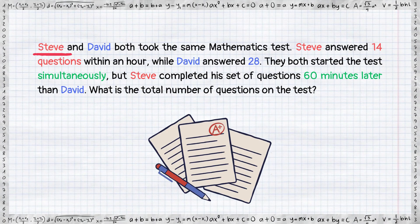So, Steve and David both took the same mathematics test. Steve answered 14 questions within an hour, while David answered 28. They both started the test simultaneously, but Steve completed his set of questions 60 minutes later than David. What is the total number of questions on the test?